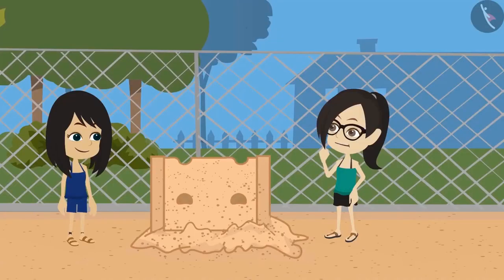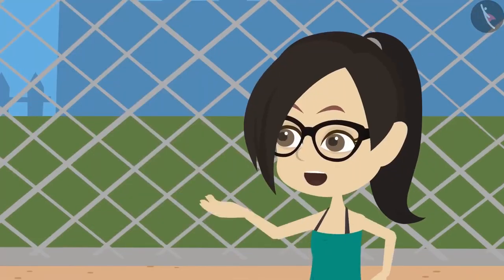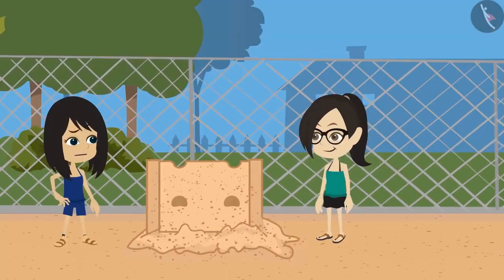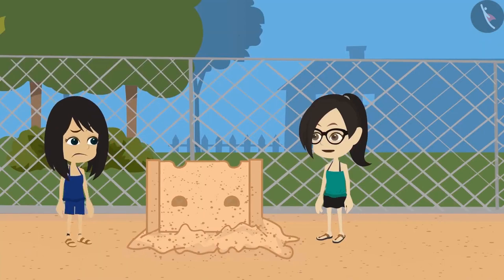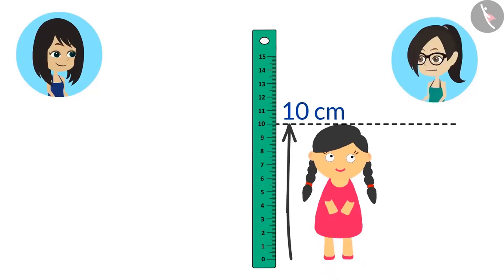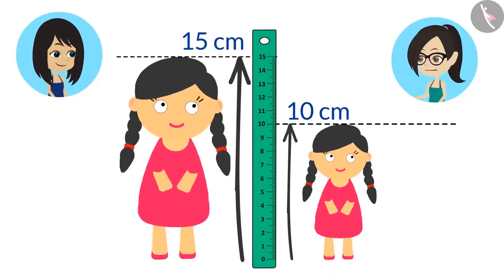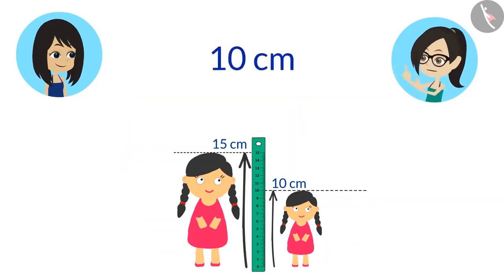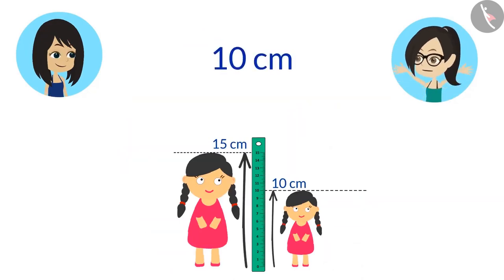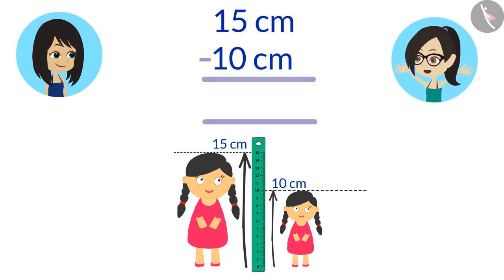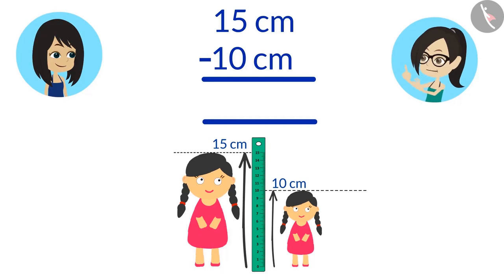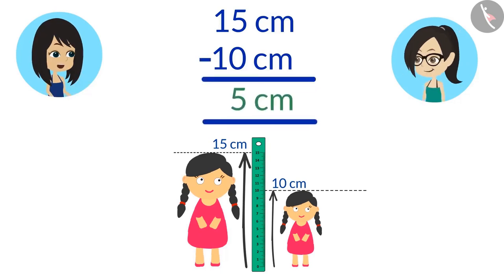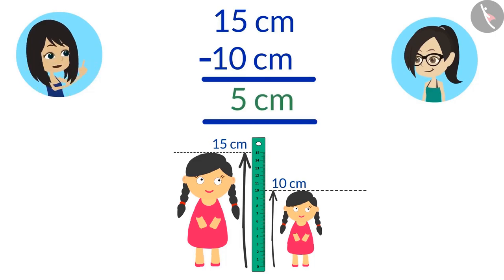Did you notice one thing? My doll is taller than your doll. Yes, but how much taller is your doll than my doll? That's easy to find. Your doll is 10 centimeters tall and my doll is 15 centimeters tall. If we subtract the height of your doll, which is 10 centimeters, from the height of my doll, which is 15 centimeters, we subtract 10 from 15 and get 5.